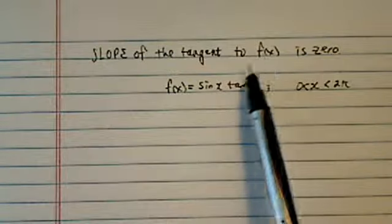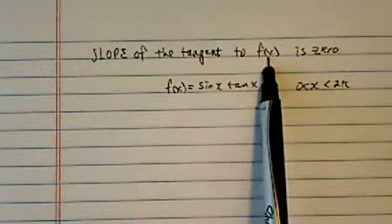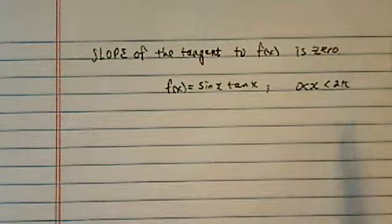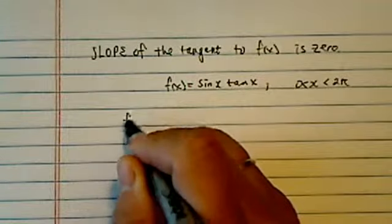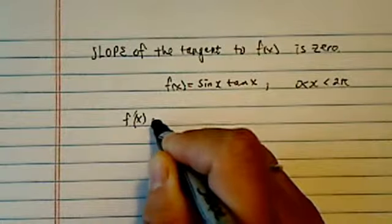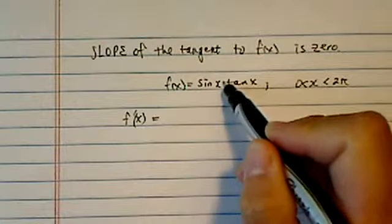Thank you for watching this clip on finding slope of the tangent to a function given. We're supposed to set equal to zero. So basically we need to find the derivative of the function, and here we have a product rule.